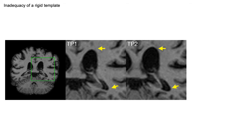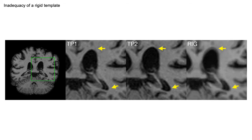Let's have a look at a subject with considerable atrophy between time points 1 and 2. Computing the template from rigidly aligned time points results in averaging voxels across tissue classes and causes blurring, as is highlighted by the arrows. As a result, the initialization of longitudinal time points may be far from the ideal solution. Note that this effect may be present even if it is invisible to the eye.